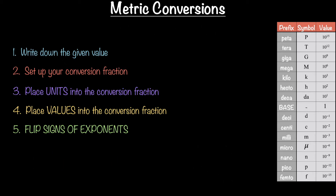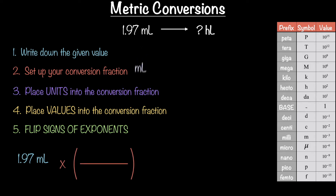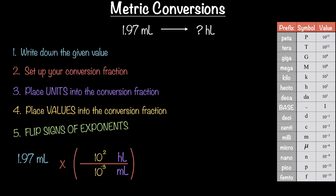Let's convert 1.9 milliliters into hectoliters. Step one: write down the given value. Step two: set up your conversion fraction. Step three: place the given unit — milliliters — on the bottom, and the unit you want — hectoliters — on the top. Step four: place in the values from the metric table. Step five — most important — flip the signs of the exponents.